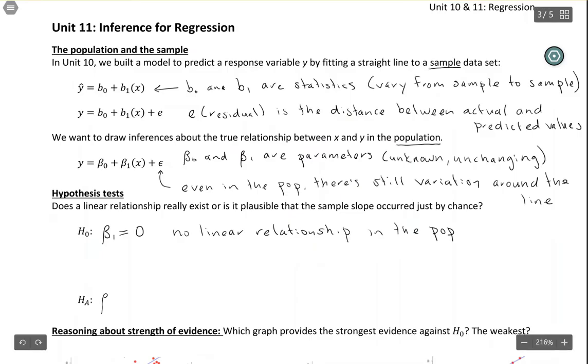The alternative hypothesis—usually this is a two-sided test—is that β₁ is not equal to 0, meaning there is a relationship in the population. We conclude there's a relationship when our sample slope is further from 0 than we'd expect just by chance.